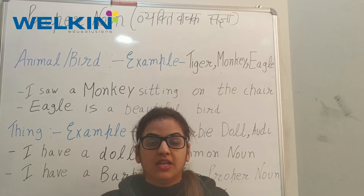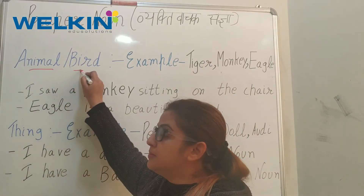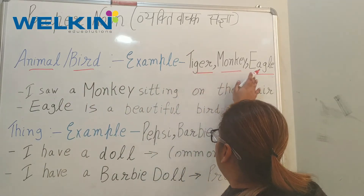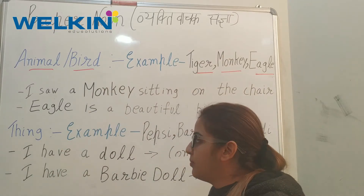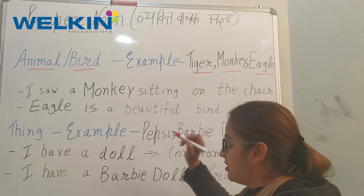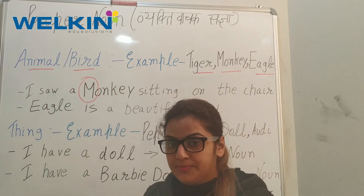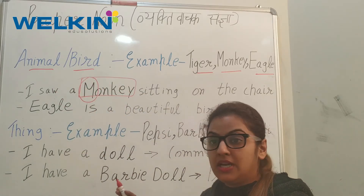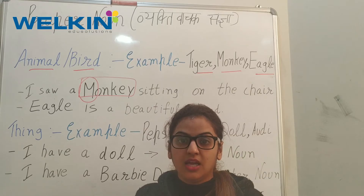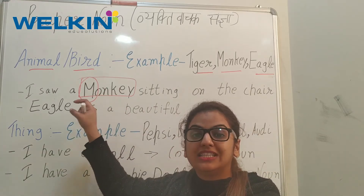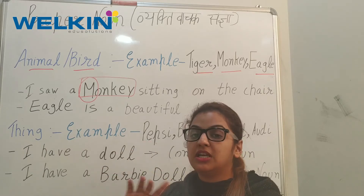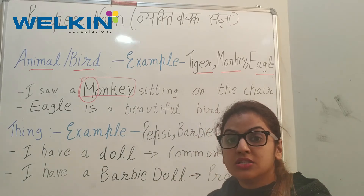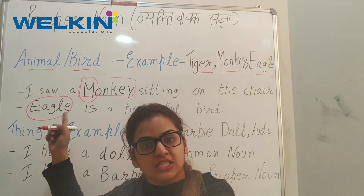Now we will talk about animals and birds. Examples of animals are tiger and monkey; an example of a bird is eagle. In sentence form: 'I saw a Monkey sitting on the chair' — Monkey is capitalized and is a proper noun because we have mentioned a specific animal. If it is just a simple, unspecified animal, it remains a common noun. Similarly, 'Eagle is a beautiful bird' — Eagle here is a proper noun.